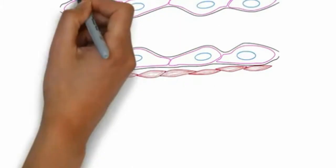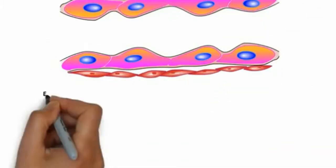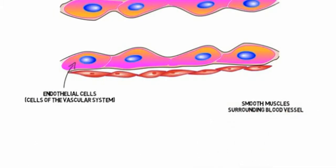This is a cross-section of a blood vessel. Its cells are called endothelial cells. These are surrounded by smooth muscles, which help to regulate optimal circulation.